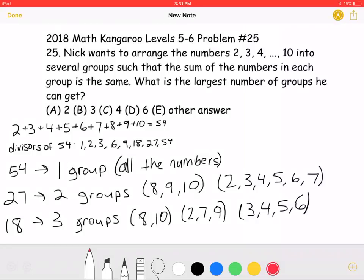This is the 2018 Math Kangaroo Levels 5-6 Problem Number 25. Nick wants to arrange the numbers 2, 3, 4 through 10 into several groups such that the sum of the numbers in each group is the same. What is the largest number of groups he can get?